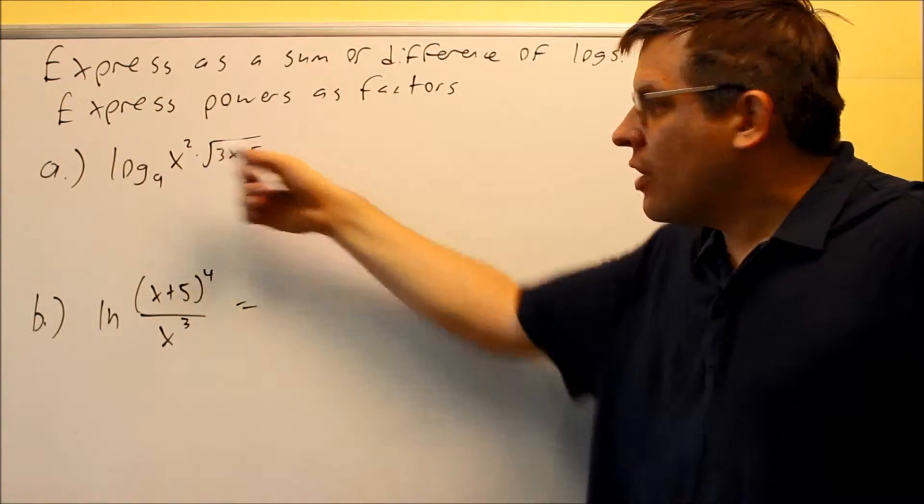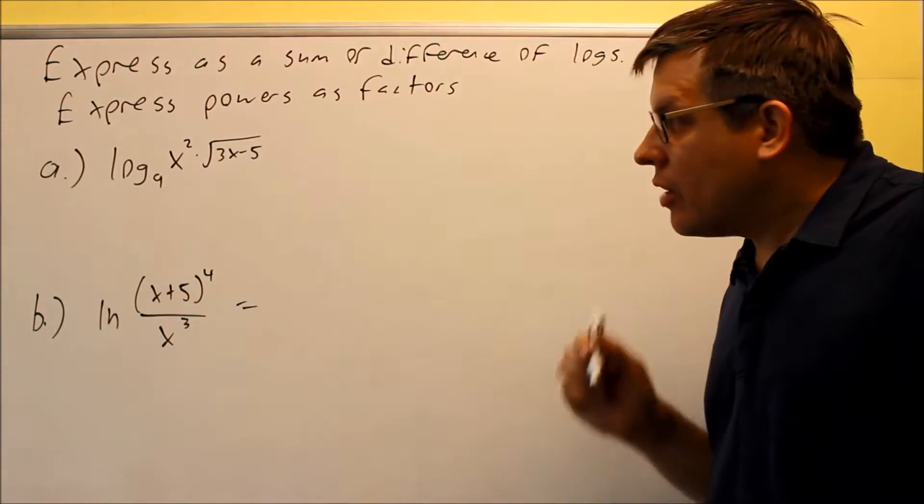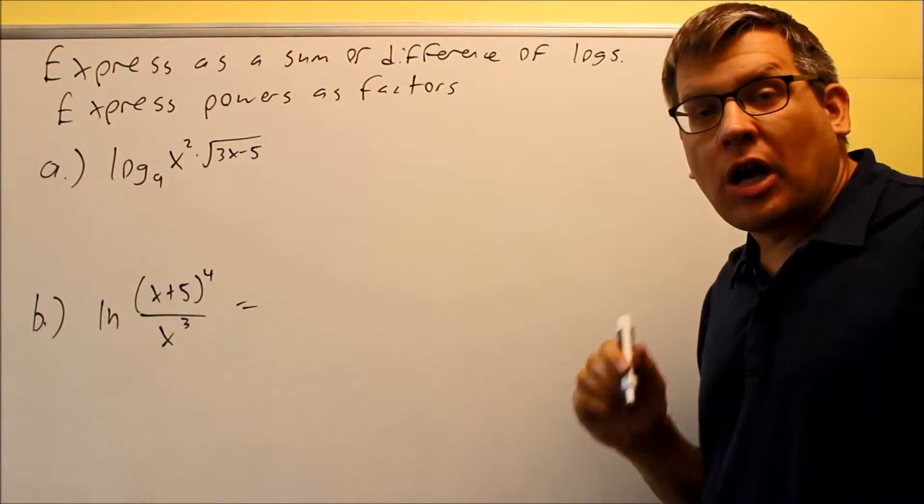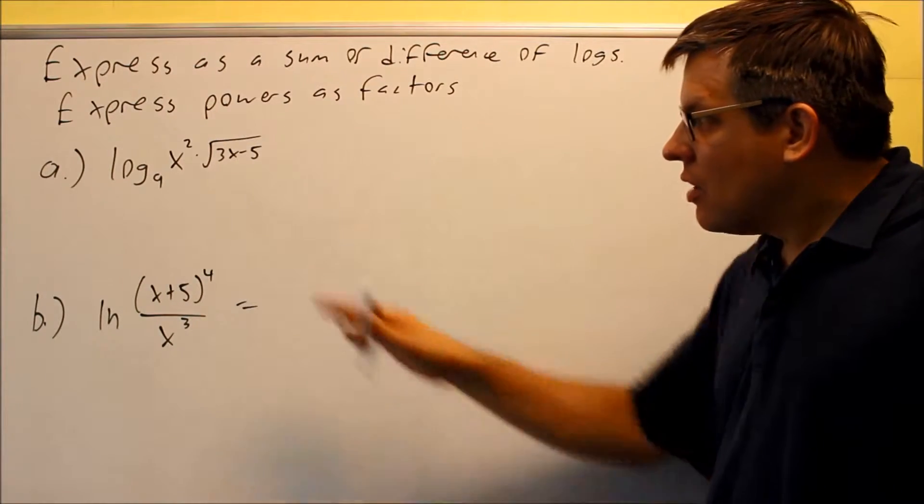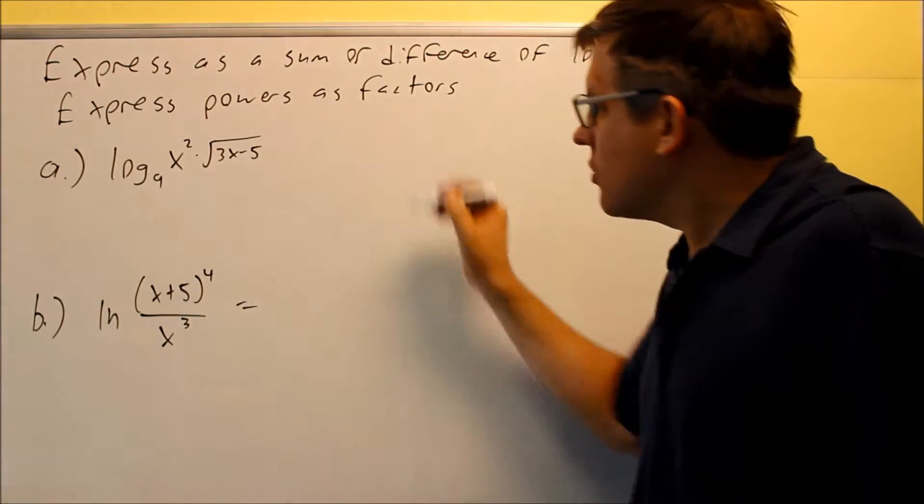we have two things that are being multiplied together. We're going to use our rule number six, so you want to make sure you review your log properties first before attempting these. That's our rule number six that says that we're allowed to break that apart into two different logs.